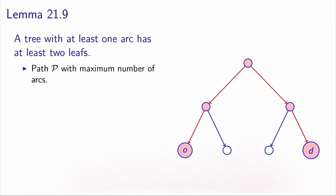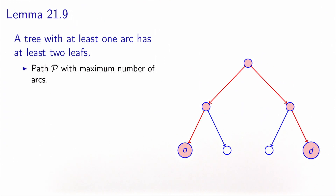The first property says that a tree with at least one arc has at least two leaves. In order to prove that, let's consider the path in the tree with the maximum possible number of arcs. I have plotted this path in red — that's the longest possible path you can find in this tree. We denote by O the first node of the path, and by D the last node of the path.